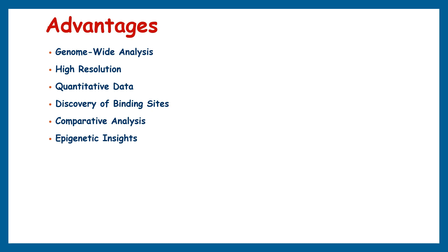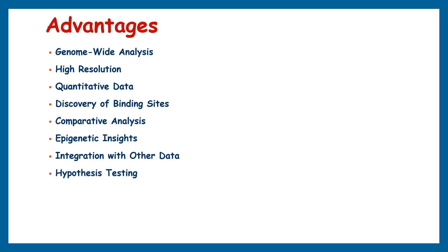ChIP sequencing can be used to study epigenetic modifications such as DNA methylation or histone modifications, which play critical roles in gene regulation and cellular identity. ChIP sequencing data can also be integrated with other omic data — such as gene expression profiling or DNA methylation data — to gain a more comprehensive understanding of regulatory mechanisms. Furthermore, it allows us to test specific hypotheses regarding protein-DNA interactions, such as validating predictions from computational analysis or investigating the binding of a protein to a specific DNA motif.